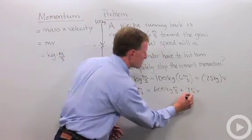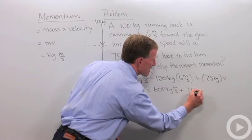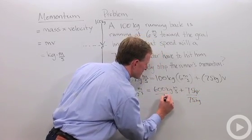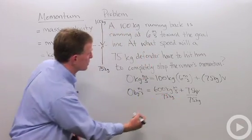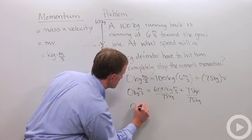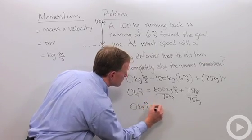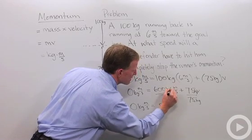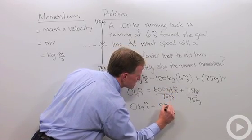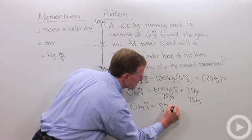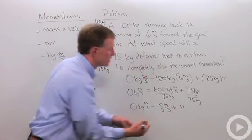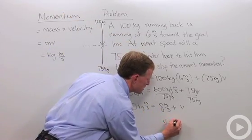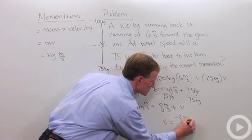And if we divide by 75 kilograms, don't forget my units here, and I divide this by 75 kilograms, I'm going to get my zero momentum equals 600 divided by 75 is 8, and my mass cancels, so 8 meters per second plus V. So in order for something to cancel out to equal zero, my velocity must be minus 8 meters per second.